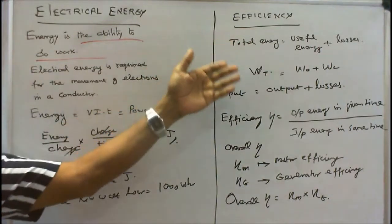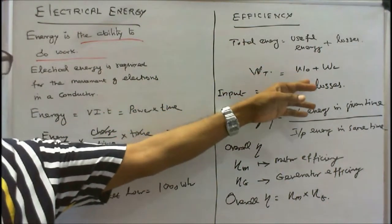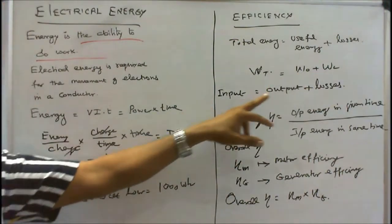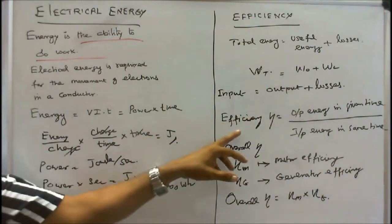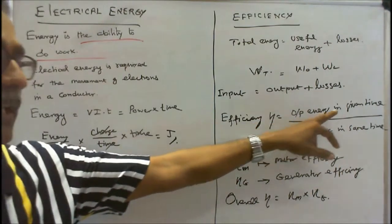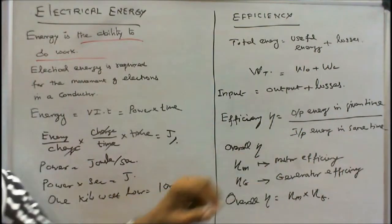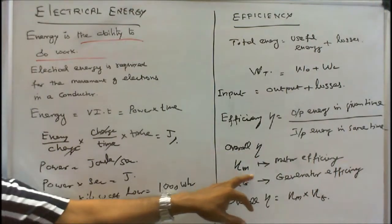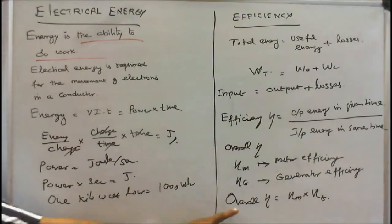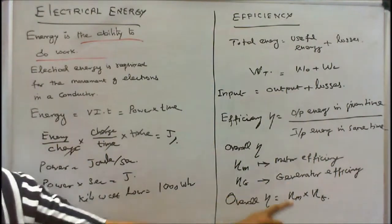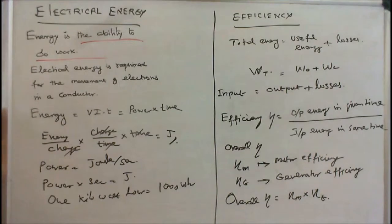Here total energy equals Wt, therefore Wt equals useful energy plus loss. So input equals output plus losses. Therefore efficiency equals output energy in a given time divided by input energy in the same time. Let's say the overall efficiency when we are combining cascading, like pump and motor or generator and motor. If motor efficiency is eta M and generator efficiency is eta G, the overall efficiency equals motor efficiency times generator efficiency. This information is available in all textbooks.